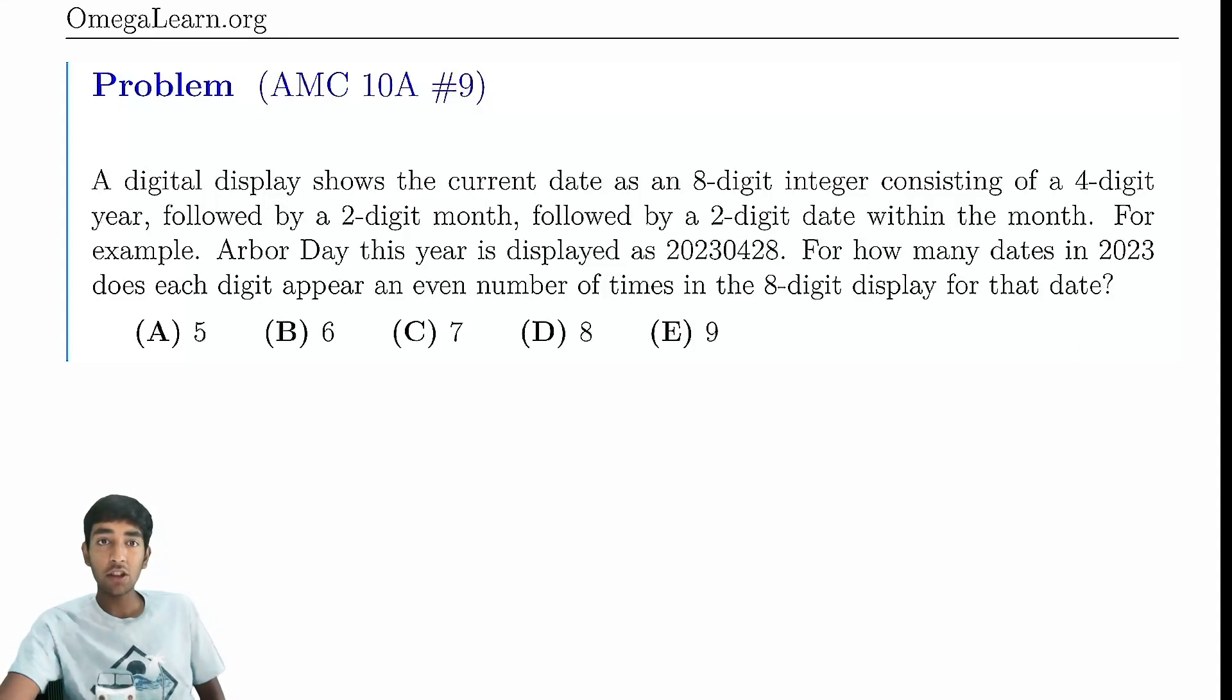A digital display shows the current date as an 8-digit integer, consisting of a 4-digit year, followed by a 2-digit month, and then a 2-digit date within the month. For example, Arbor Day is 2023, 04, 028.